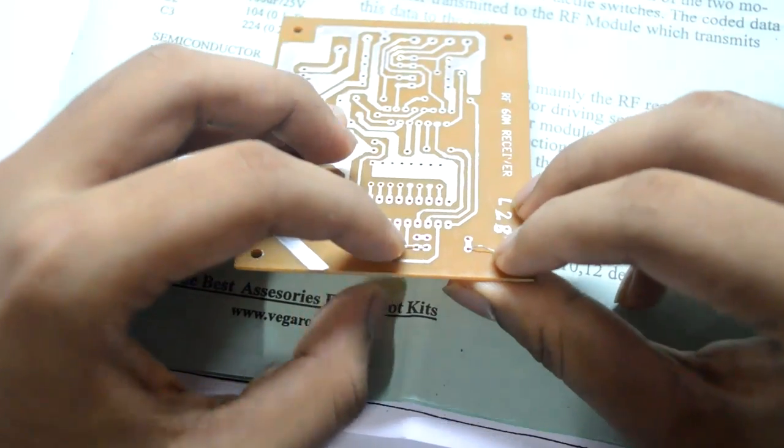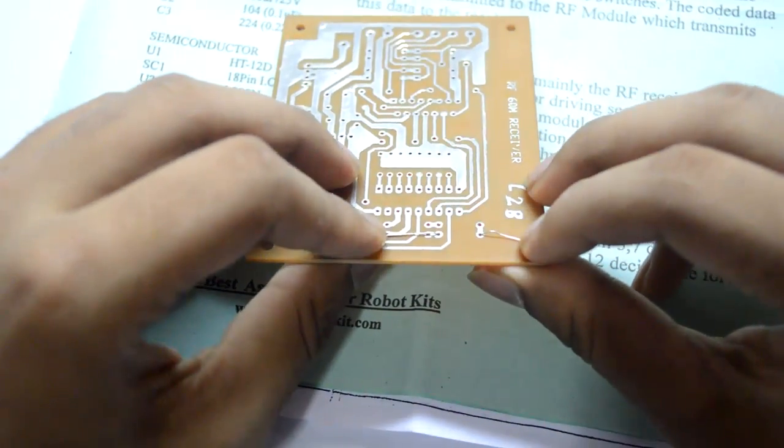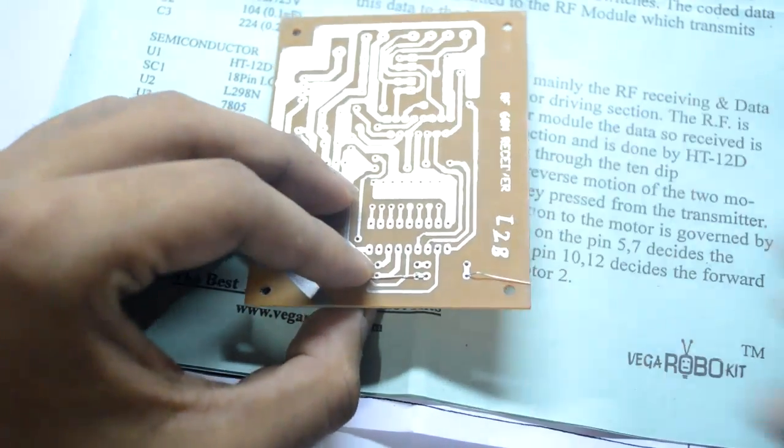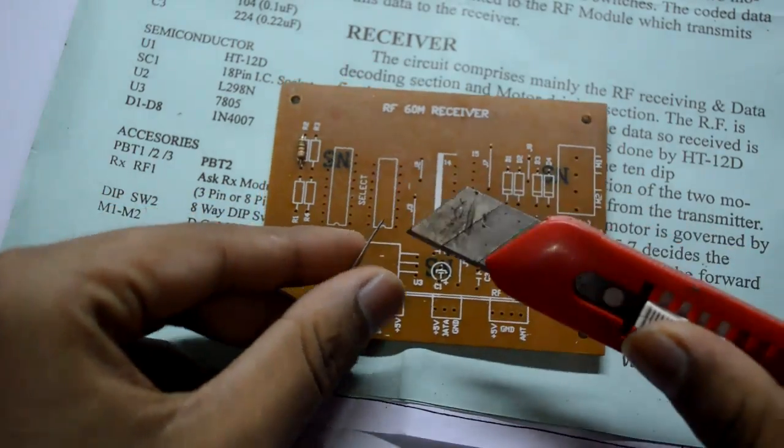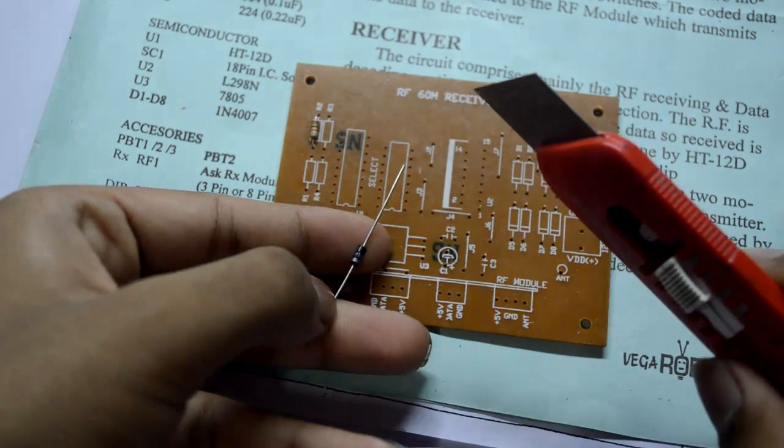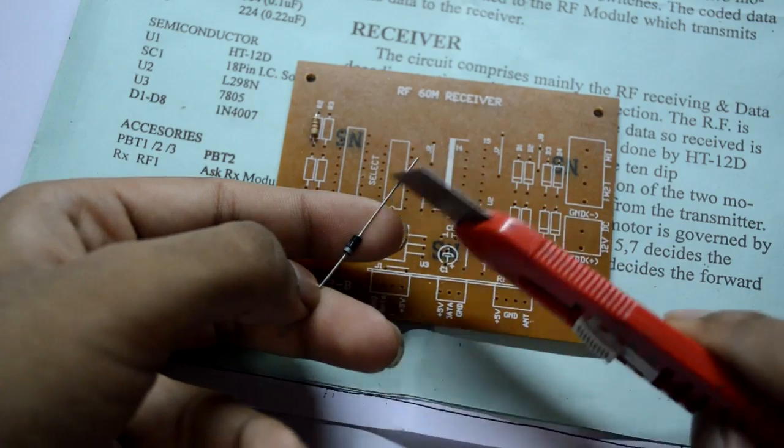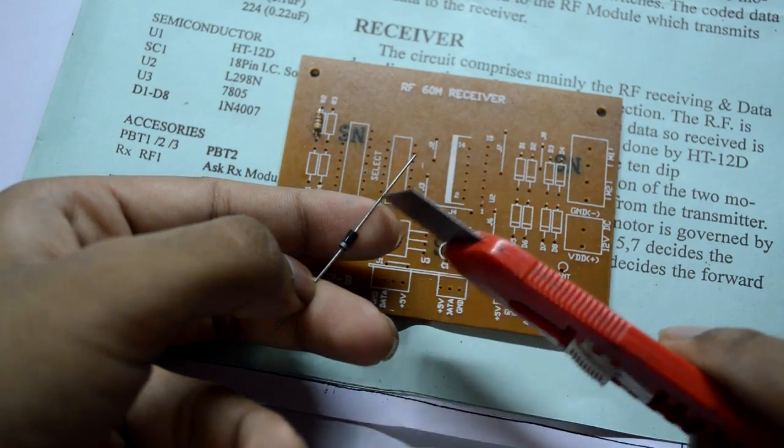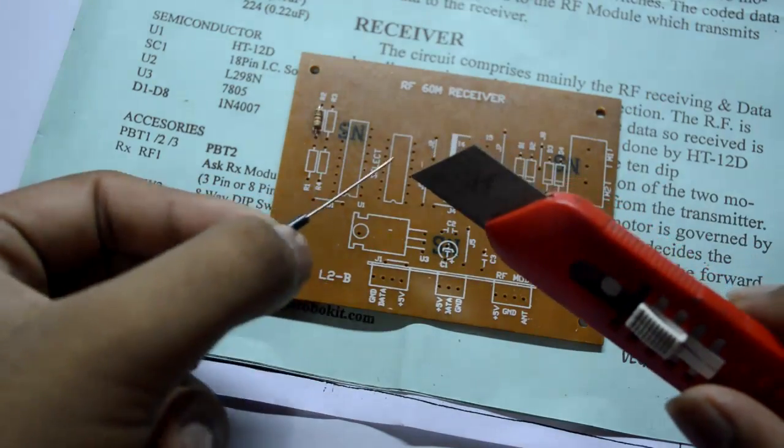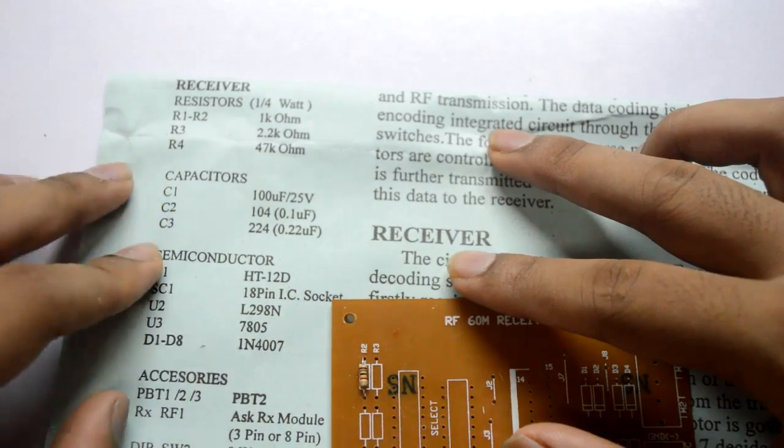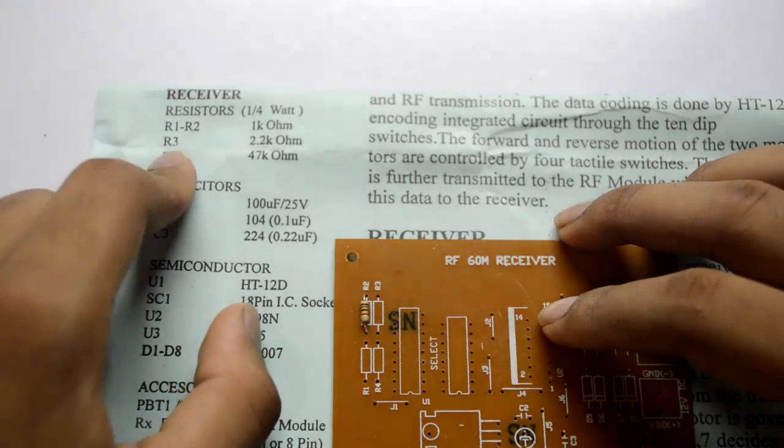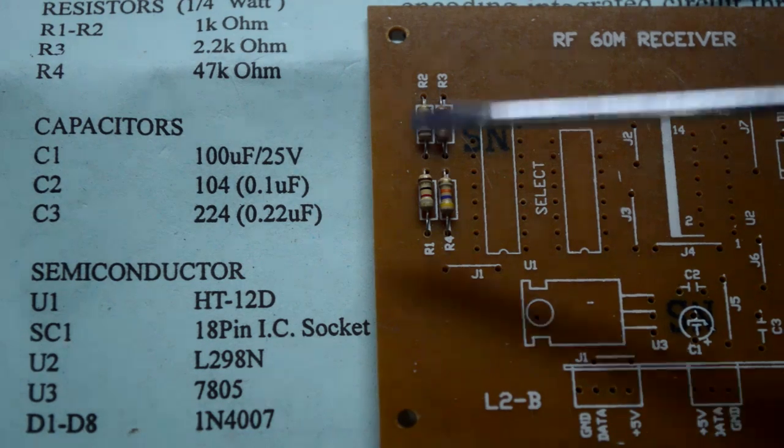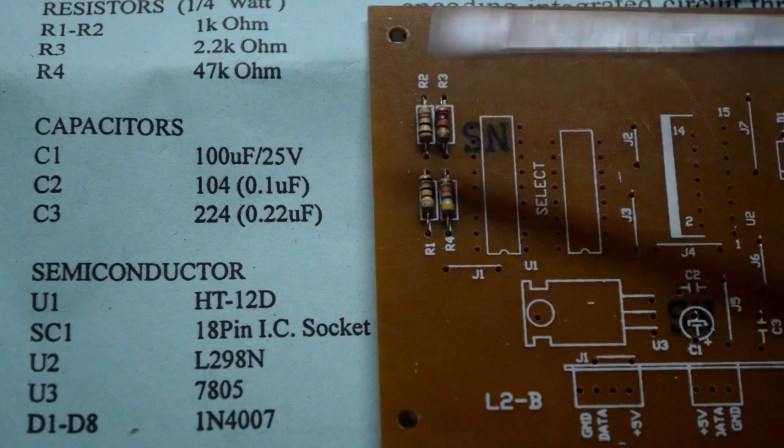Just give it a tiny solder spot over here. Now before you actually go ahead and solder all these components, I would like to give you a tiny bit of advice. Take a pen knife and any random component and make sure you scrape off its terminals because there is a tiny coating on it which doesn't allow these components to get soldered on the PCB. After you complete with all the resistors, go ahead with the capacitors and follow this list one by one. Here we go.